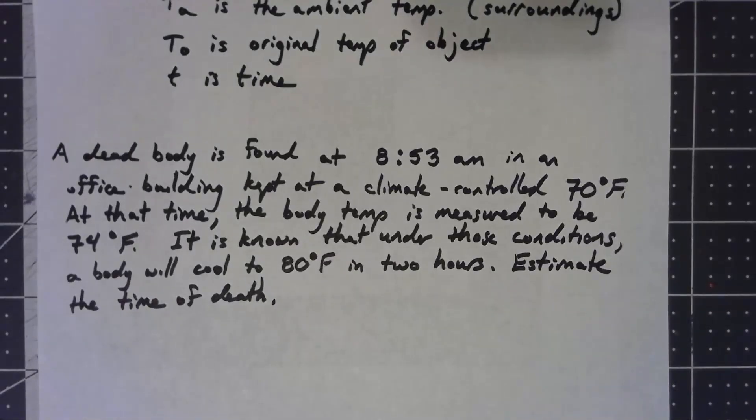So let's say we find a dead body found at 8:53 a.m. in an office building that's kept at a steady 70 degrees Fahrenheit all day. At the time it's found, they measure the body temperature and find that it's 74 degrees Fahrenheit. Under those conditions, it's known that a body cools to 80 degrees Fahrenheit in about two hours, and we want to estimate the time of death.